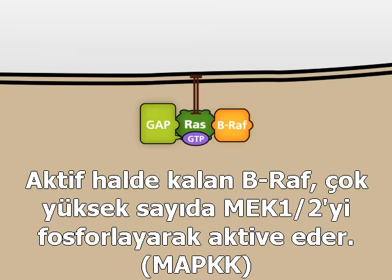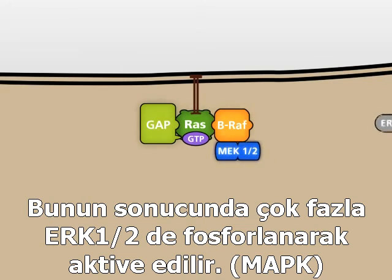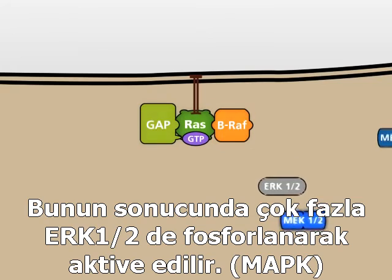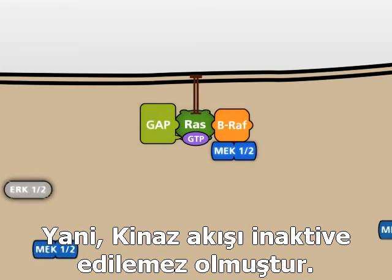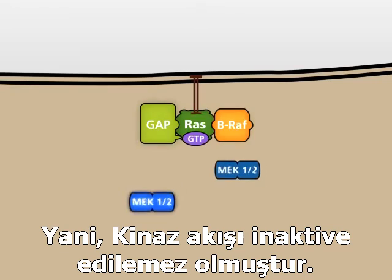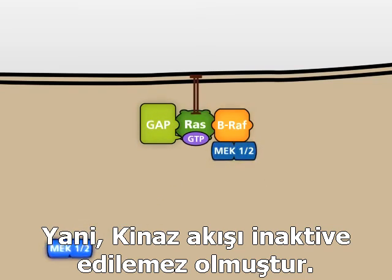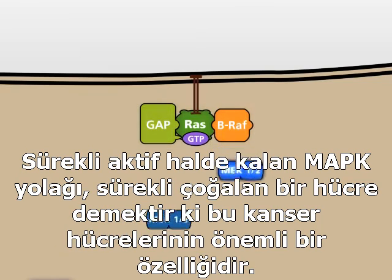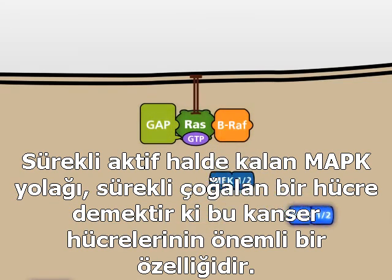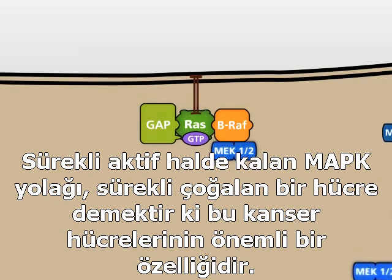BRAF phosphorylates and activates an increasing number of MEK1 and 2 proteins. In turn, MEK1 and 2 activate ERK1 and 2, which activate JUN and FOS. Thus, the kinase cascade is not turned off. A permanently activated MAP kinase signaling pathway results in continuously activated proliferation, which is an important feature of a tumor cell.